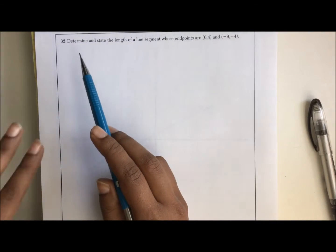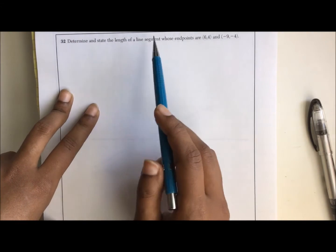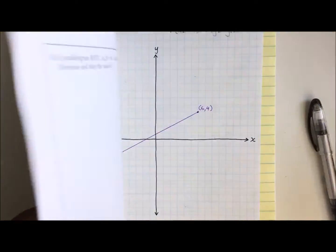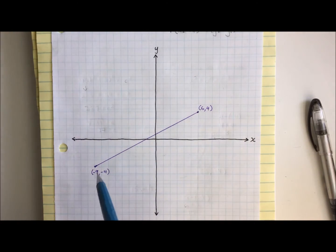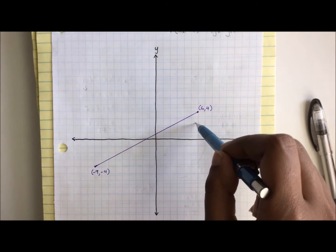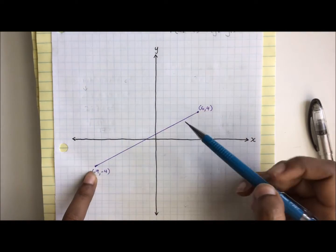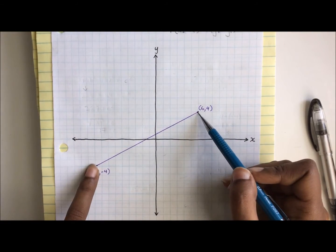Now question 32 says the following: determine and state the length of a line segment whose endpoints are 6,4 and negative 9, negative 4. I've already gone ahead and drawn out the points and connected the dots. Here we have a nice line segment. We're trying to find the distance between these two points.